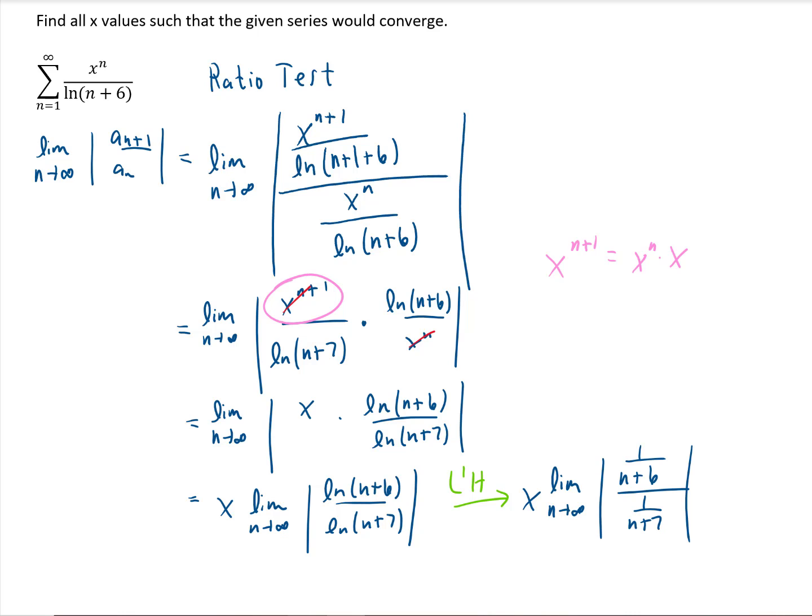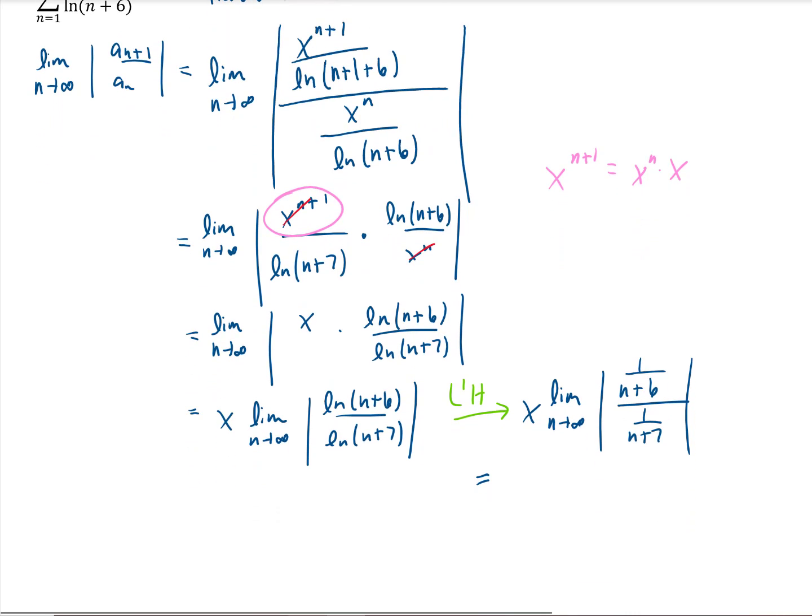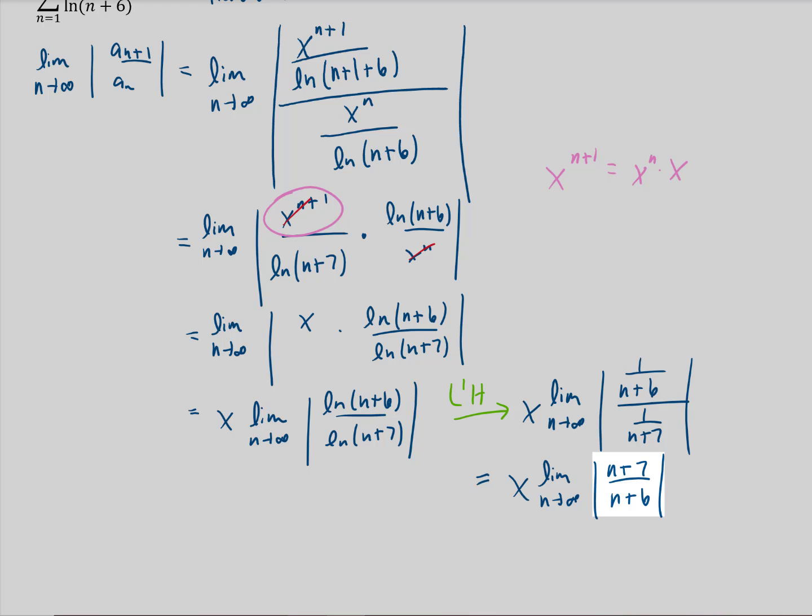And if we take the limit of what's left, that should be the same limit as the original problem. Now, just one more step of algebra here. We're dividing fractions. So I'll flip the one in the denominator, and we end up with the limit as n goes to infinity of n plus seven over n plus six.